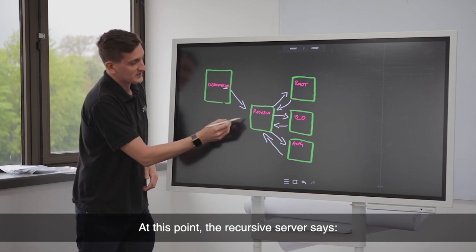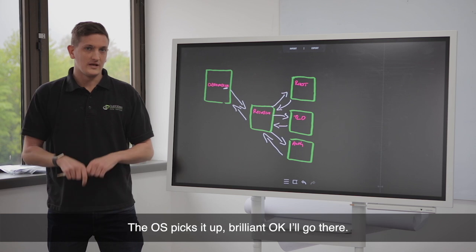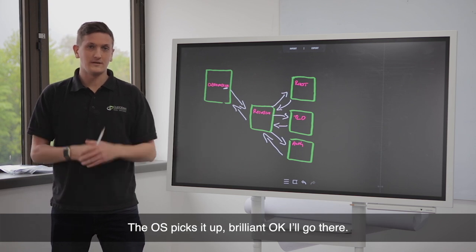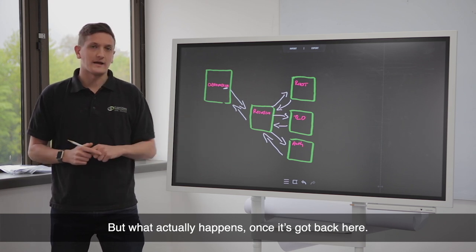At this point, the recursive server says, okay, in order to get to that, you need to go to this server. The operating system picks it up. Brilliant, I'll go there. But what actually happens once it's got back here?